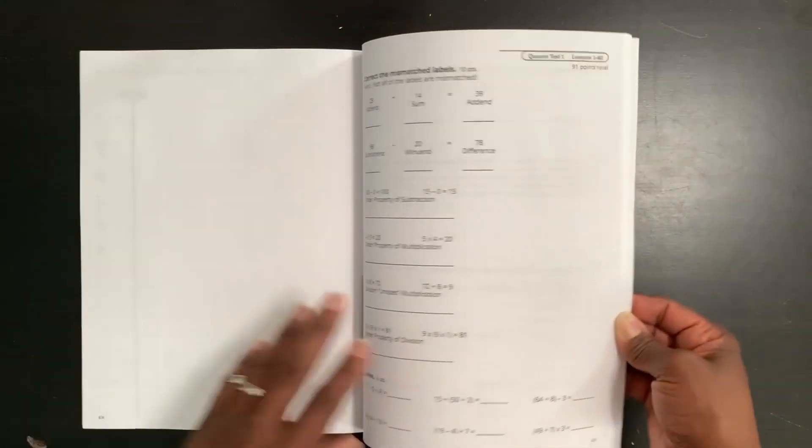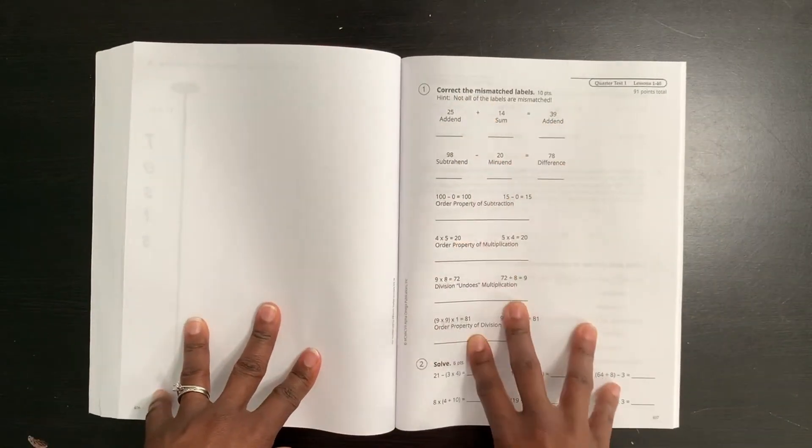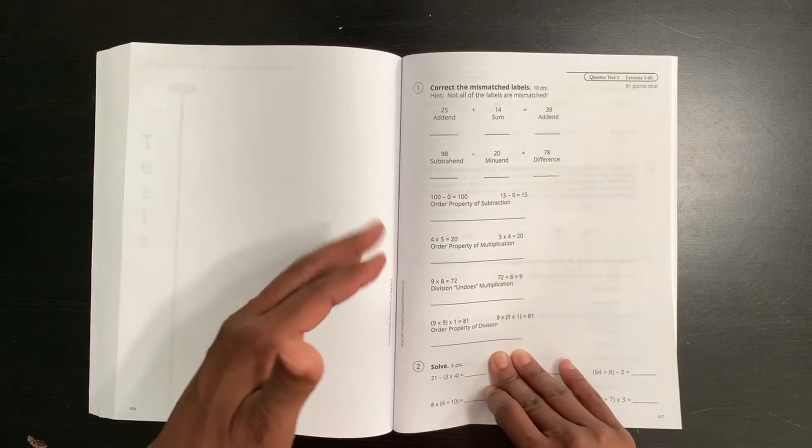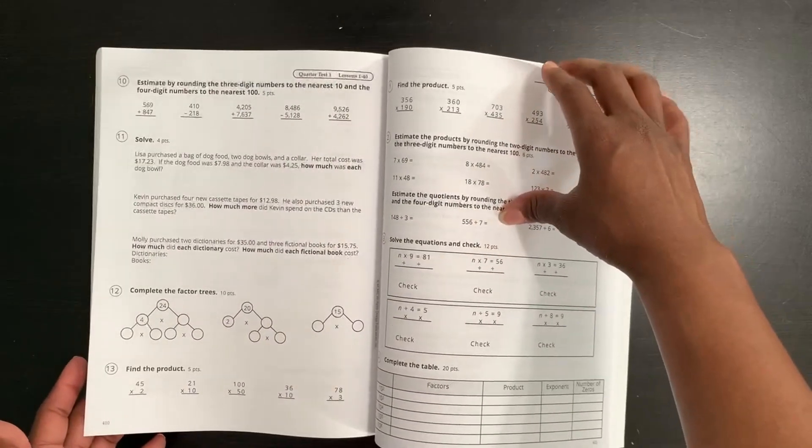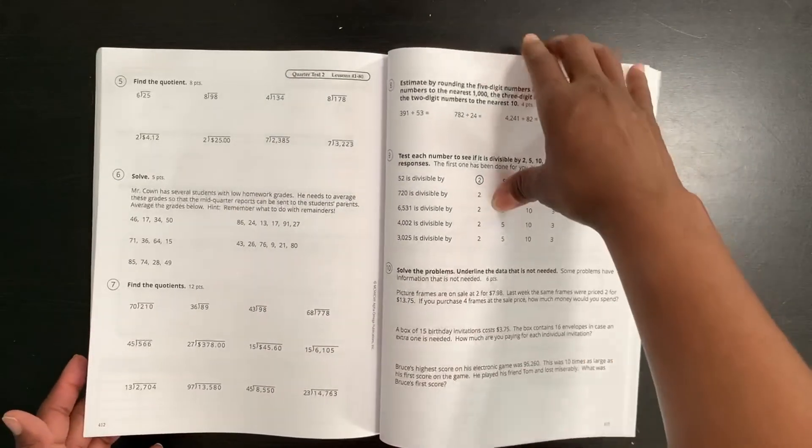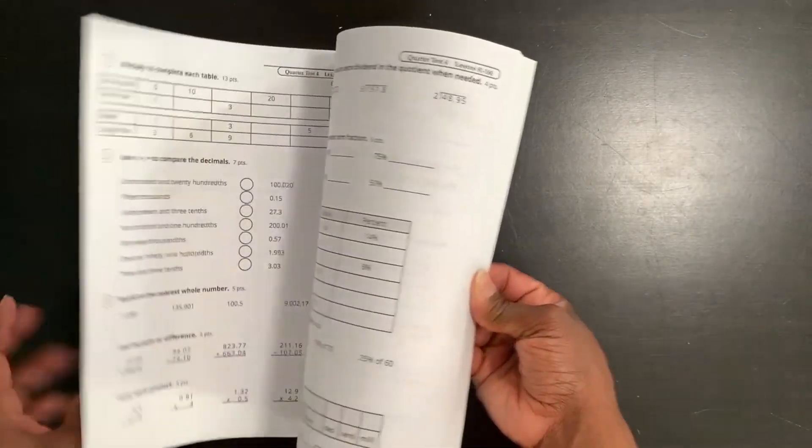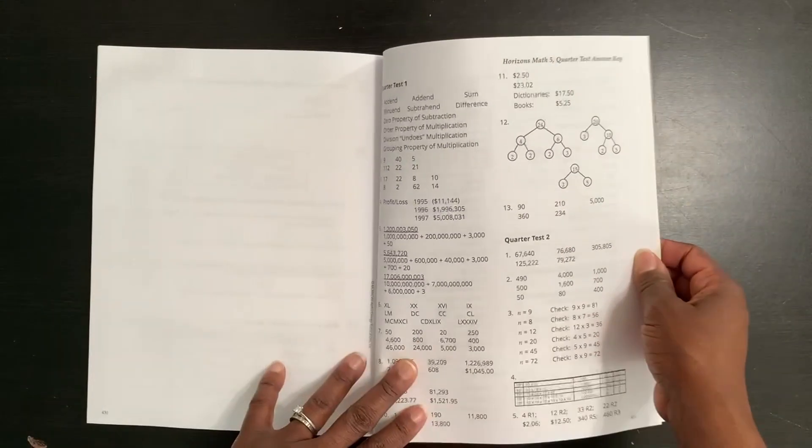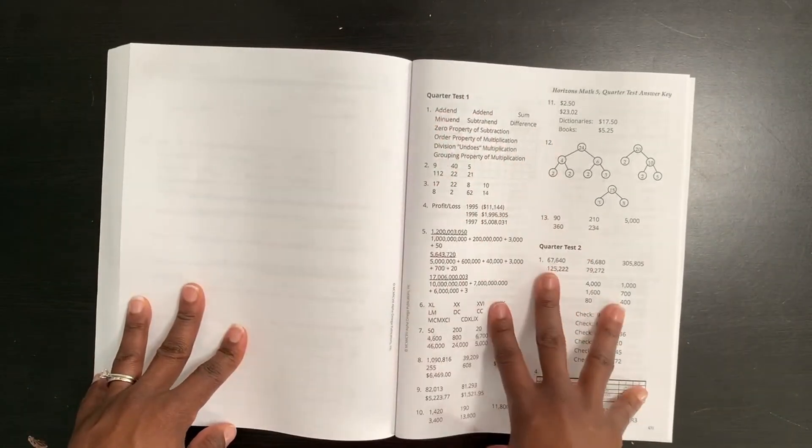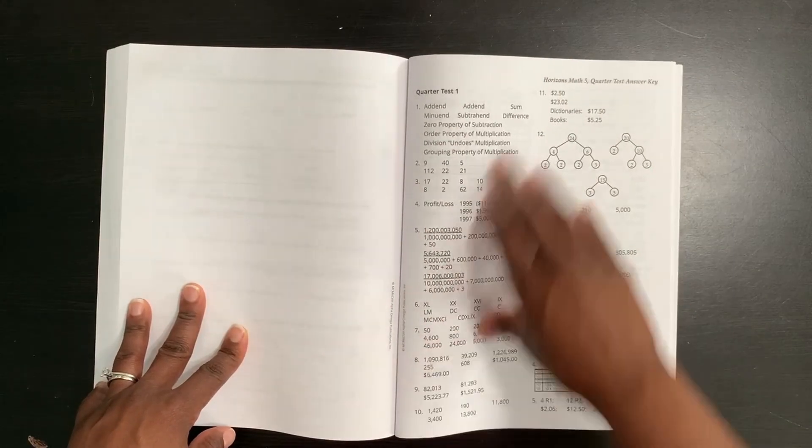And then here are the test. This is not the test answers. This is the actual test. Here's your quarter test here. And this is all of your quarter tests and then your final exam. So you have all of the quarter tests, quarter test number two, quarter test three and four. And then you have your final exam. And my daughter just, we just made copies of these. Then you get into your answer keys here. All of your tests, quarter test one, two, four, and then three, four, and then your final exam here.